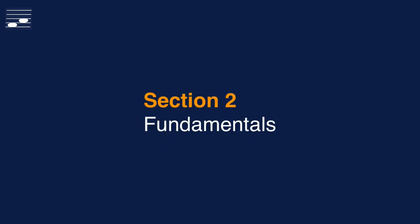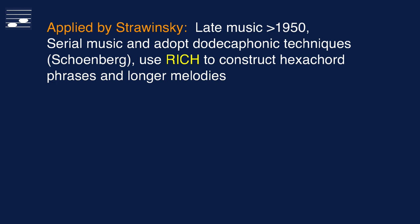The book by Josef Strauss illustrates the composition process in Stravinsky's late music, say after 1950. Although earlier there was an outspoken dichotomy between the Schoenberg dodecaphonic and serial approach, now Stravinsky starts to adopt techniques such as the RICH, to create hexachord phrases and longer melodies from serial source material.